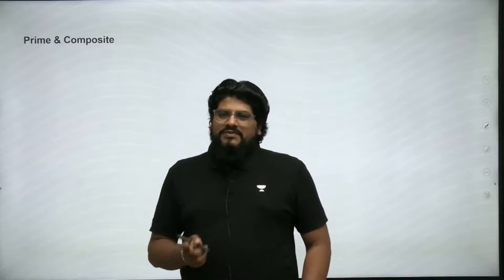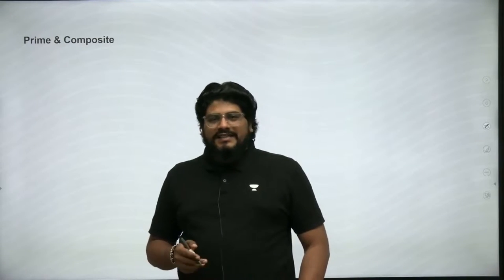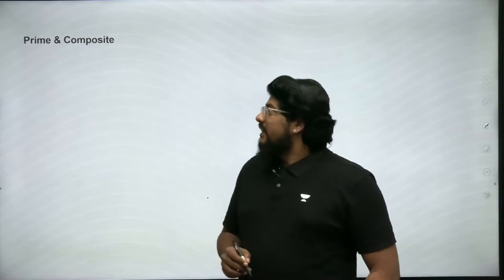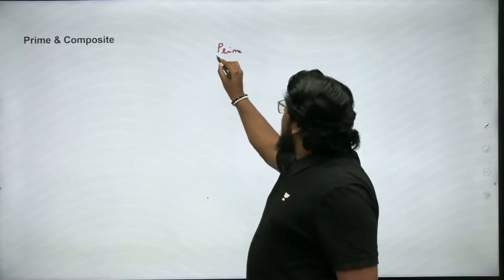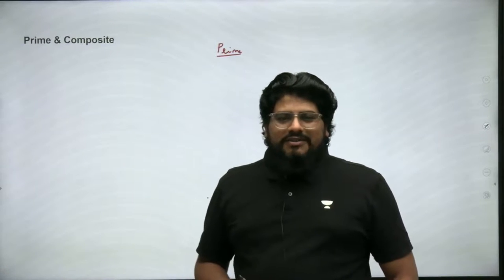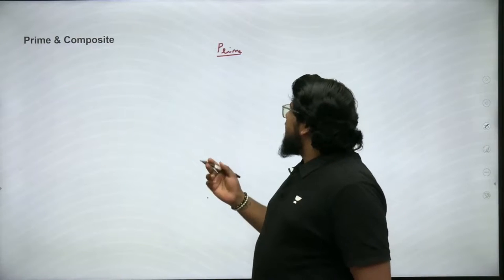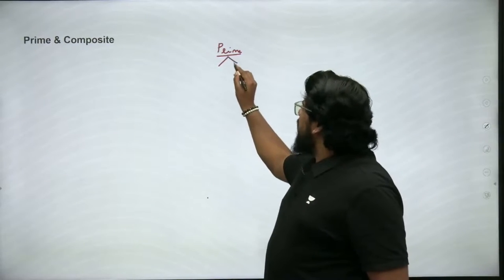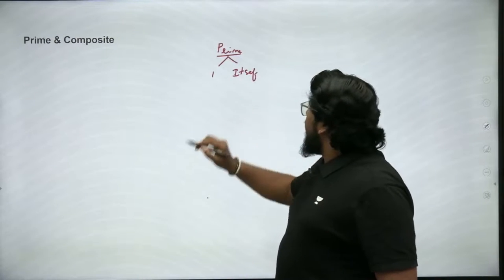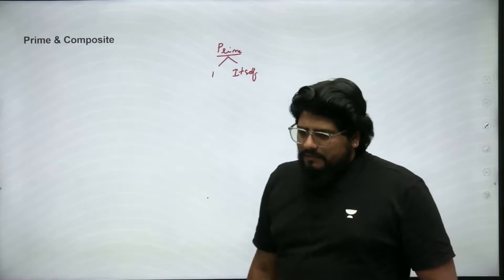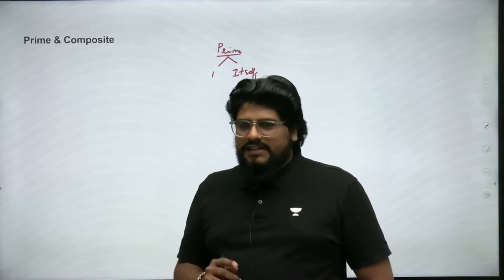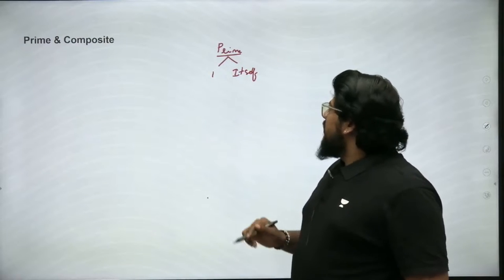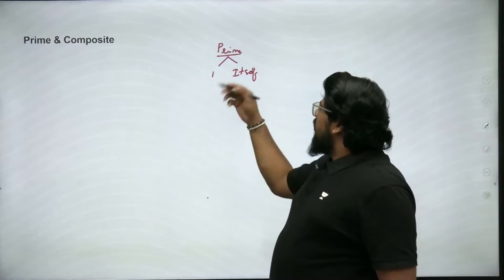If you have missed our previous videos, please go and see them in the description box to have a clear-cut understanding of this chapter. So in today's session we are going to see prime and composite. To start the session — what is a prime number? A number which has only two factors, one and itself, is said to be a prime number. A factor is a number which perfectly divides a given number. So a prime number has only two factors: one and itself.